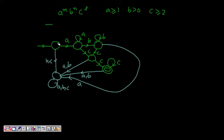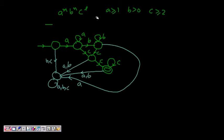So I hope this is correct. Every state handles a, b, c — a and then b can move forward, and this path can bypass b and come directly to c. This is the DFA for a^n b^n c^l where a ≥ 1, b ≥ 0, and c ≥ 2. This is the final state. I hope you understand this. Thanks a lot.